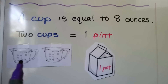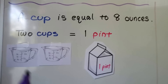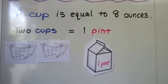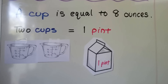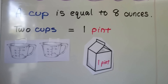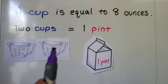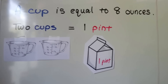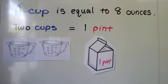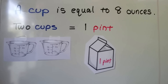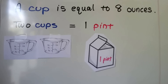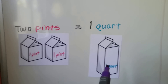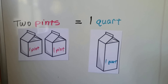For right now, what we need to know is that two of these cups will make one pint. We can take two cupfuls and fill that pint container. If we had two of these pint containers, we could fill a quart container.